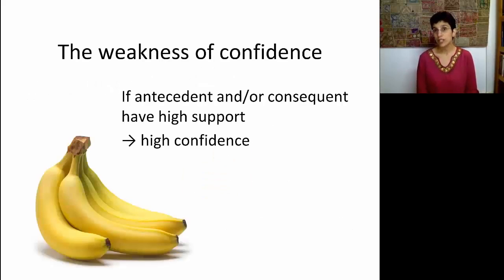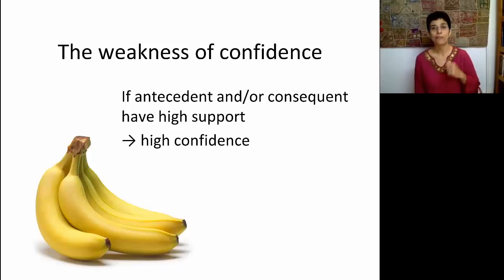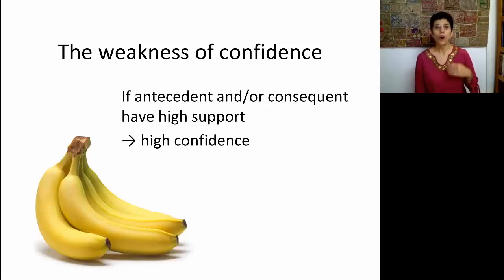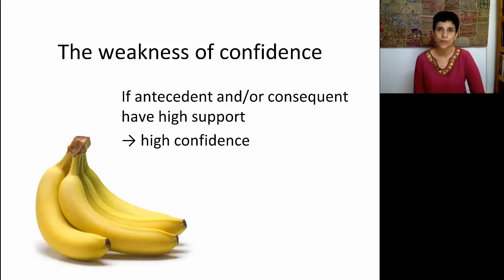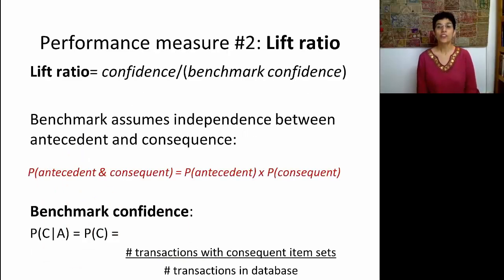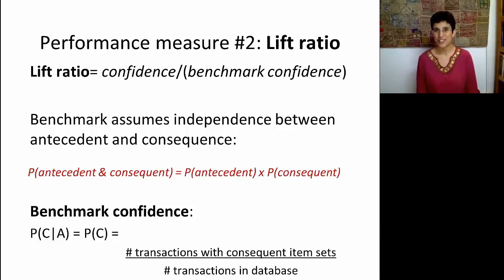What is the problem with using confidence? If some items in the antecedent or consequent are very popular — such as bananas when shopping in the United States — you're automatically going to get high confidence. But that's not necessarily going to indicate that this is an interesting rule. For that reason, there's another performance metric called the lift ratio, not to be confused with lift in the context of classifiers.